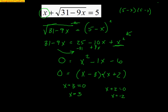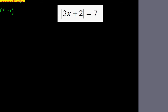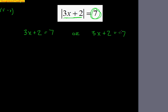Now let's look at absolute value equations. For a simple one like this, remember: the expression inside the absolute value could be positive or negative and still give the same absolute value result. If I want the result to be 7, then the inside could be positive 7 or negative 7. So I set up two equations: 3x minus 2 equals 7, giving 3x equals 9, so x equals 3... wait — 3x equals 5, so x equals 5 thirds. Or 3x minus 2 equals negative 7, giving 3x equals negative 9, so x equals negative 3. Those are the two answers.